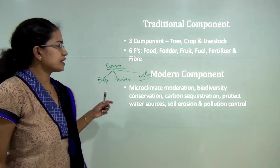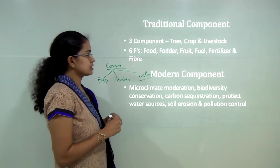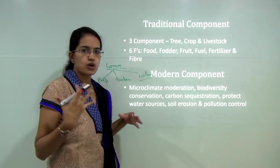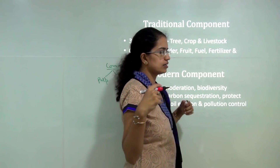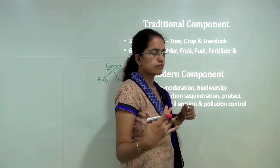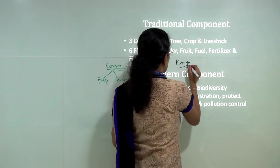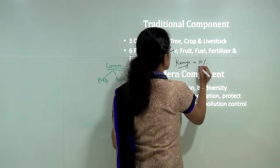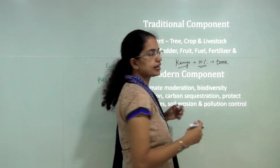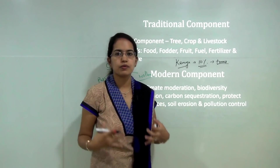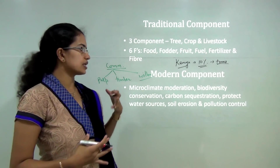It's not just India that focuses on agroforestry. Different parts of the world, like African nations, have made huge efforts. In Kenya, for example, there is a rule that 10% of farms must be covered under trees. This is a kind of regulation to promote agroforestry not only in India but also in countries abroad.